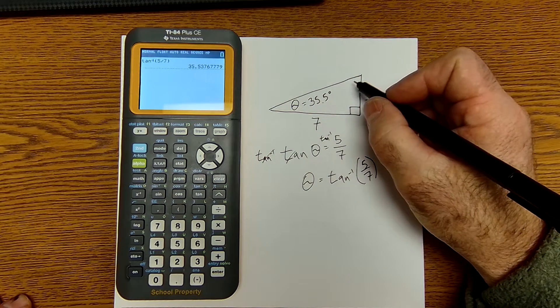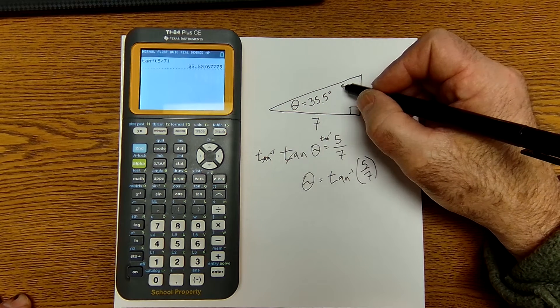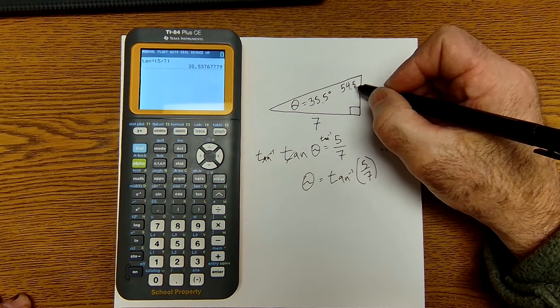Those two angles are complementary. So this angle will be 90 minus that, or 54.5 degrees.